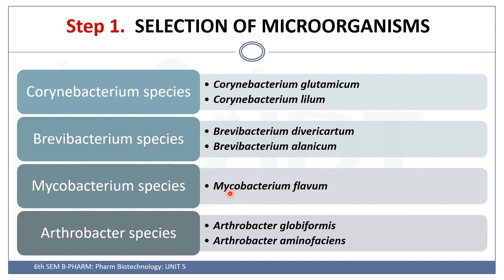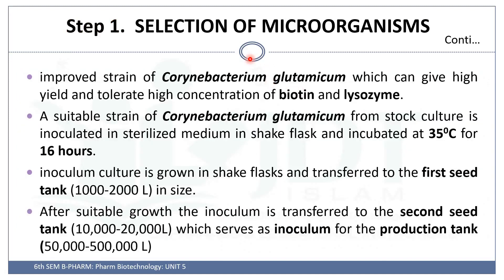And Arthrobacter species like Arthrobacter globiformis and Arthrobacter aminofaciens. Corynebacterium glutamicum is the most commonly used microorganism for the production of glutamic acid. The improved strain of Corynebacterium glutamicum is used because it gives a high yield and can tolerate high concentrations of biotin and lysine. To prepare the inoculum, a suitable strain from the stock culture is inoculated in sterile media.